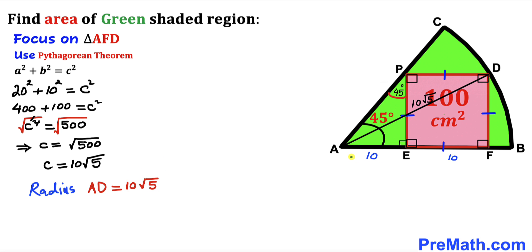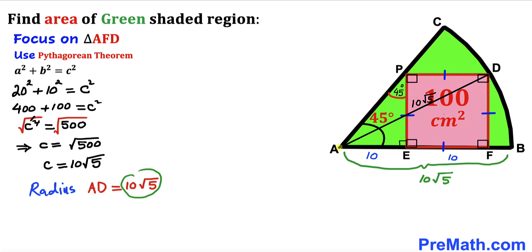Our radius turns out to be 10√5, so radius AB is also 10√5.